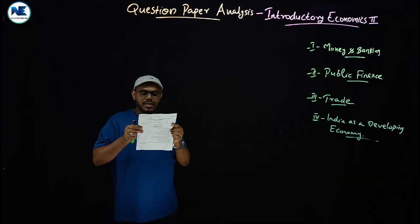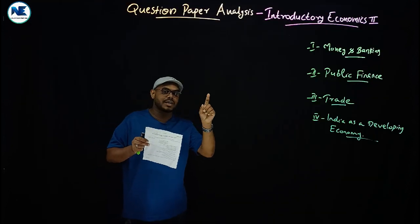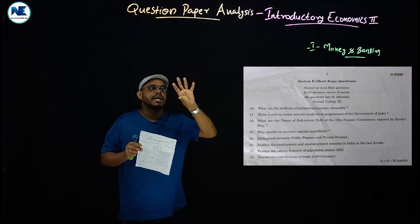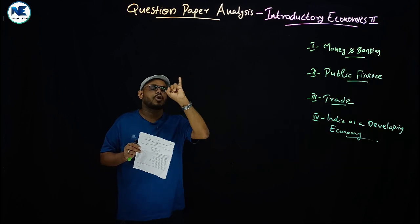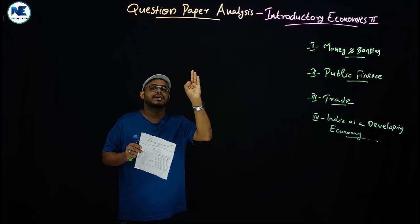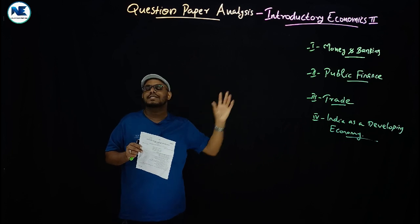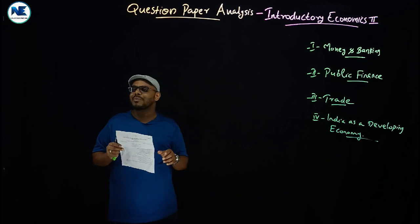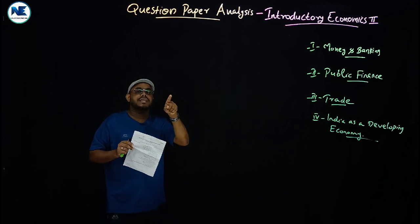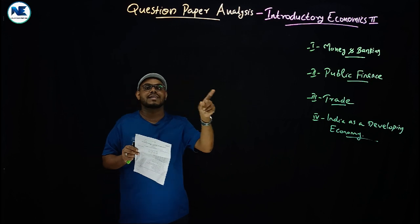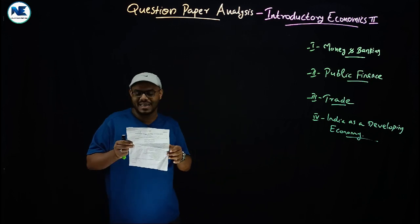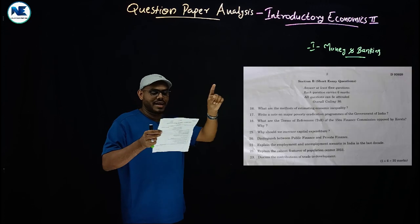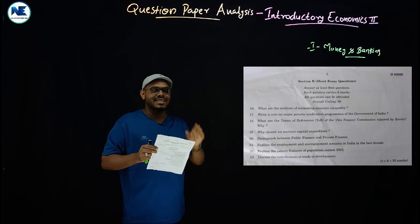The sixteenth question: what are the methods of estimating economic inequality? Methods include the Lorenz Curve and Gini Coefficient. This topic falls under developmental issues — poverty, unemployment, and inequality. The seventeenth question asks to write major poverty eradication programs of the government, including important schemes like MGNREGA — Mahatma Gandhi National Rural Employment Guarantee Act.